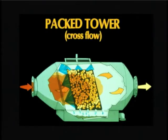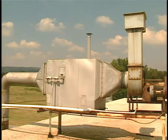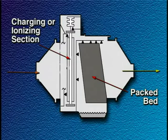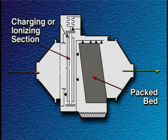In the cross flow scrubber, the gas stream flows horizontally through the packed bed, while the liquid flows down through the packing material. Because greater amounts of liquid can be used in this arrangement, the collector can handle high concentrations of solid particles without plugging. In some designs, the particles are charged before entering the packed bed in order to increase collection efficiency. These devices are referred to as ionizing wet scrubbers.